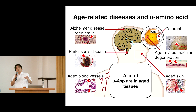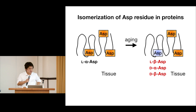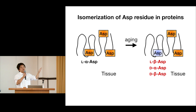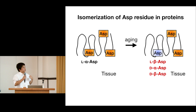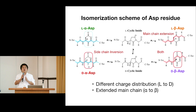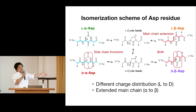So why are there so many D-aspartates? With aging, only site-specific aspartates change from the normal L-alpha aspartate to D-aspartate. During this chemical reaction, they also change to beta-aspartate. So in aged tissue there are three abnormal aspartates. The reaction goes from L-alpha aspartate through a 5-membered ring succinimide intermediate, then changes to L-beta, D-alpha, and D-beta aspartate in the protein.